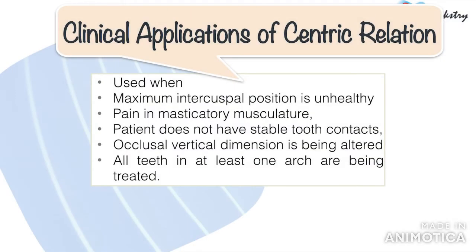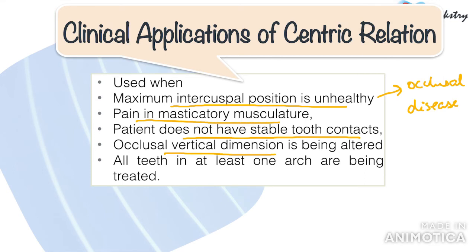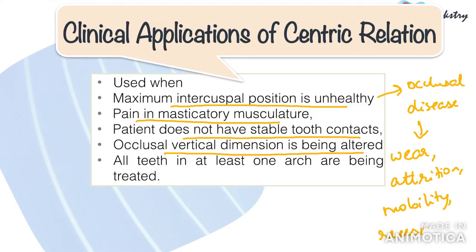So what are the clinical applications of centric relation? Clinically, centric relation is used when the maximum intercuspal position is unhealthy — in cases of occlusal disease, pain in the masticatory musculature, when the patient does not have stable tooth contacts, and when the occlusal vertical dimension is being altered. Symptoms of occlusal disease may include wear, fractures, cracks, fremitus, mobility, dentine exposure, abfraction, joint pain, muscle pain, recession and loss of vertical dimension of occlusion. If you find any of these in your patient, it is preferred to restore in centric relation.